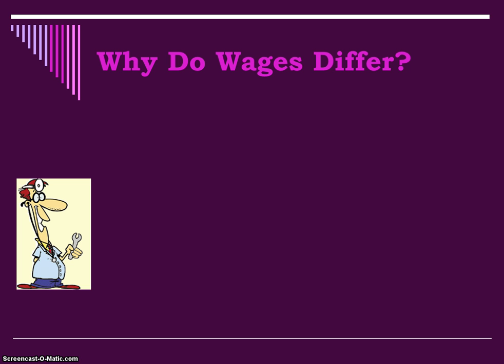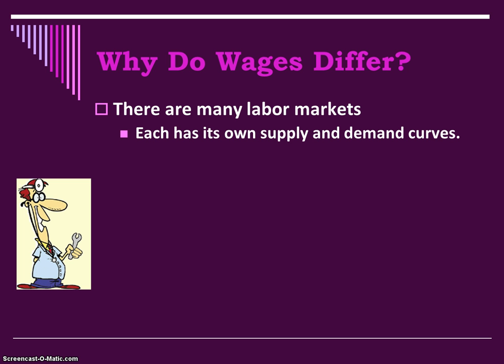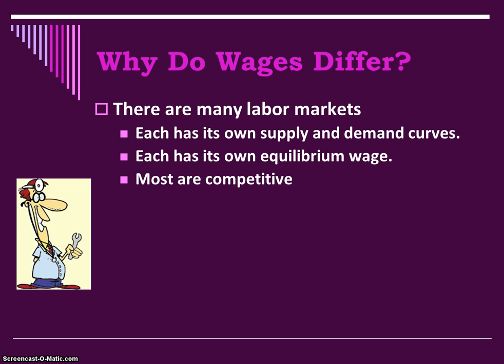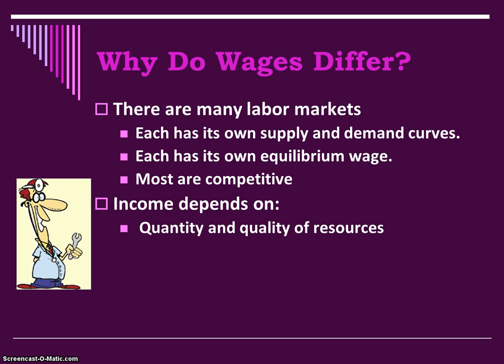Income is determined based on supply of and demand for various types of labor. Wages differ because there are many labor markets, each with its own supply and demand curve and its own equilibrium wage. Most labor markets are competitive. Income is going to depend on the quantity and quality of resources available for hire, and the supply of and demand for those resources. The amount of education, training, and skill level required — whether this is a job just anybody can do — all determines the equilibrium wage rate or income that results.